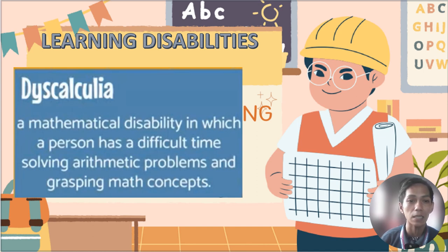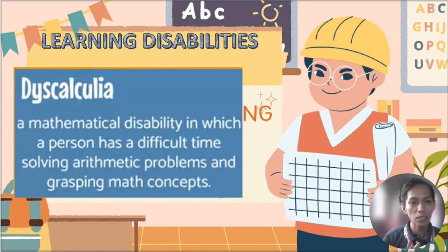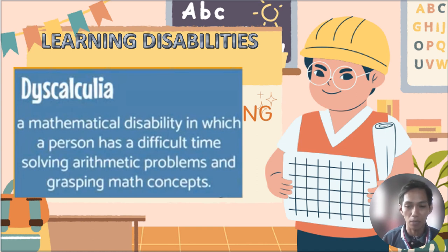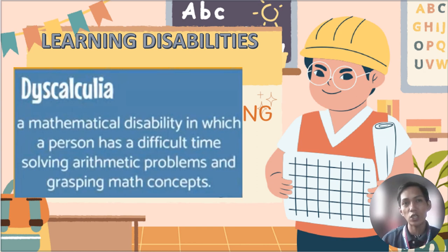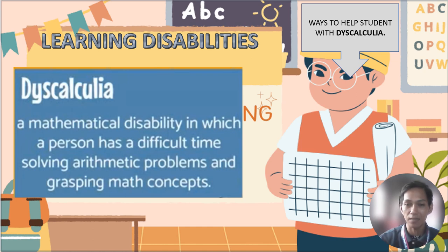The next learning disability is dyscalculia. Dyscalculia is a mathematical disability in which a person has difficulty solving arithmetic problems and grasping math concepts. Not knowing how to solve some arithmetic is not necessarily dyscalculia — it specifically refers to difficulty with fundamental operations. If you have a child with dyscalculia, please be patient and try to help the child.